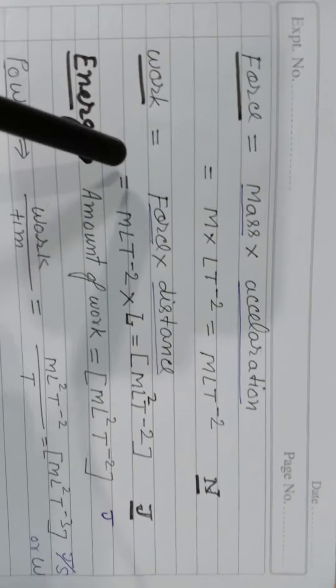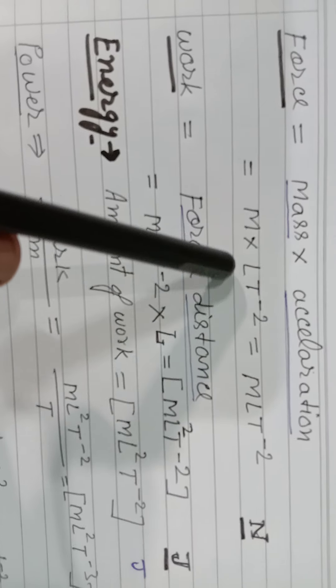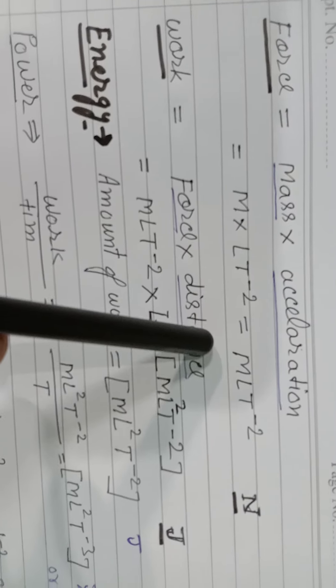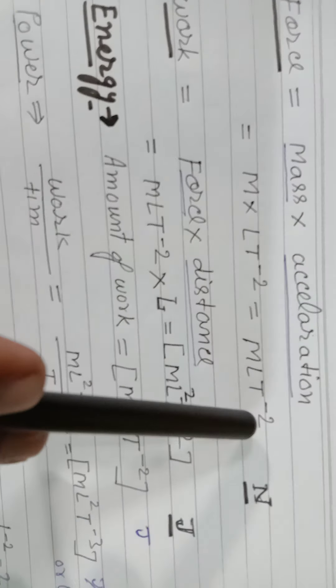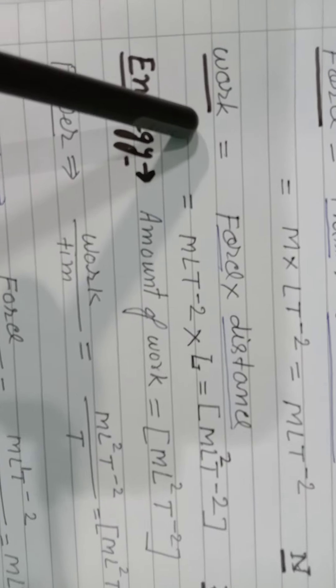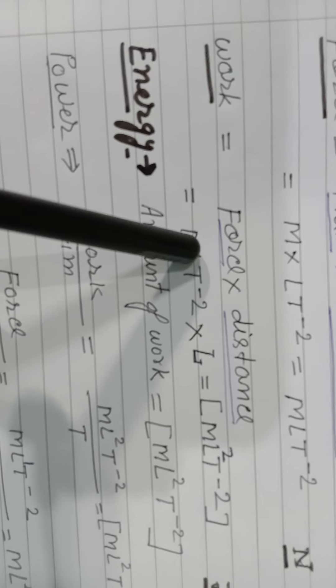Just like Force: Force equals mass into acceleration. For mass we write M, and for acceleration the dimension is [LT⁻²]. So the dimensional equation of Force is F = [MLT⁻²], and its unit is Newton.